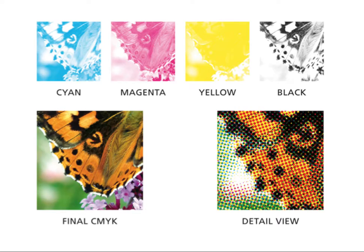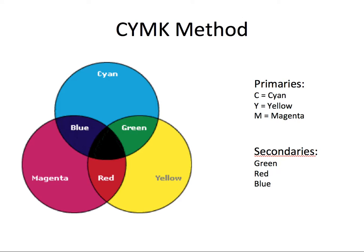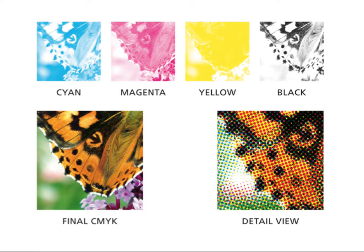So again, with this particular method we have our three primaries being cyan, yellow, and magenta — that's what the CYM stands for — and then the K for the key of black. The secondaries they create are green, blue, and red. That is our second color method.